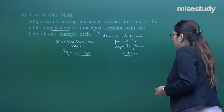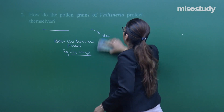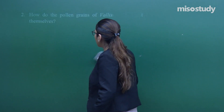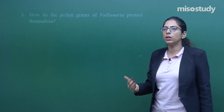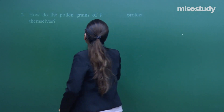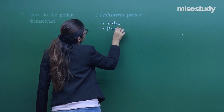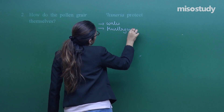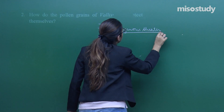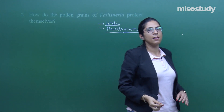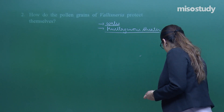Question number 2 is also one mark: 'How do pollen grains of Vallisneria protect themselves?' As you know, Vallisneria uses water for the distribution of its pollen. To protect themselves from the harsh aquatic environment, they have a covering called mucilaginous sheaths.